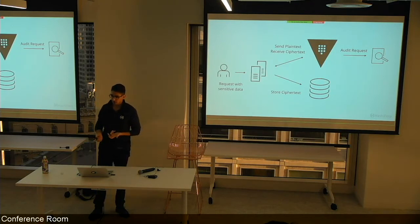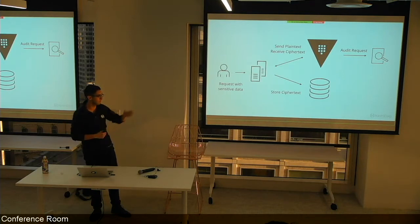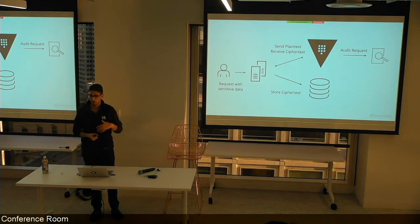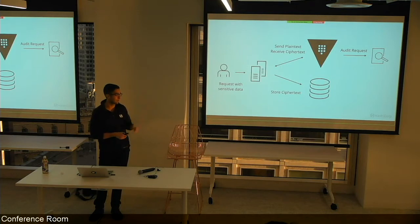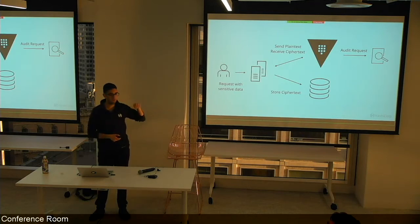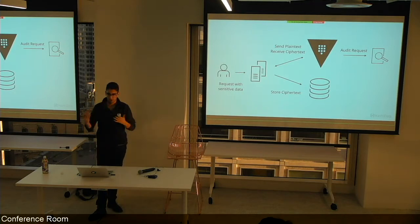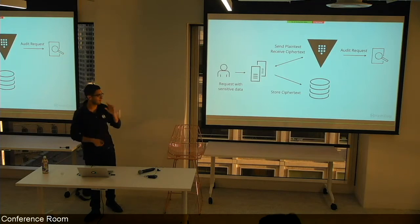In practice: a user sends a request with sensitive data — say, a credit card number — to a web server. The web server flows it to Vault saying 'here's plaintext, please encrypt it with the web key.' Vault verifies authentication and authorization, encrypts it, sends the ciphertext back with an audit log entry. The web server stores the ciphertext in whatever scale-out store it wants — DynamoDB, Hadoop, a database. The data is now encrypted but stored at whatever scale you need. The reverse flow is the same: pull ciphertext out, send to Vault, get plaintext back.